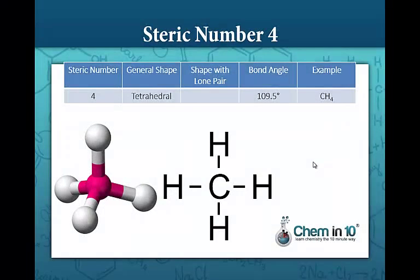Steric number four is a tetrahedral shape. Here we have carbon tetrahydride or methane. The hydrogens are as far apart from each other as possible with a bond angle of 109.5 degrees.